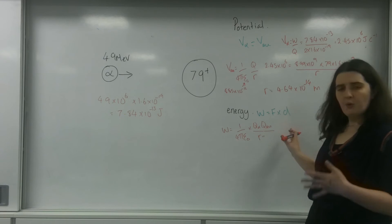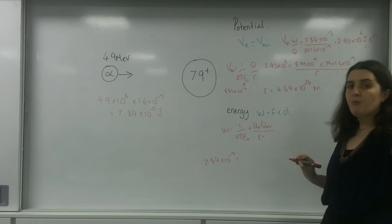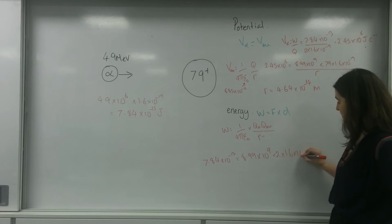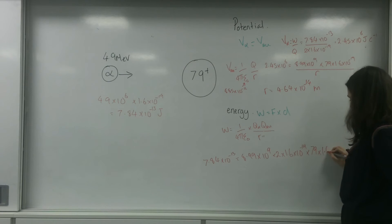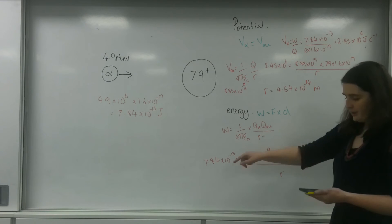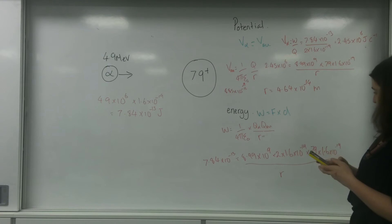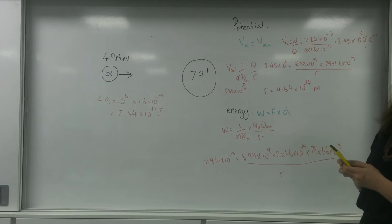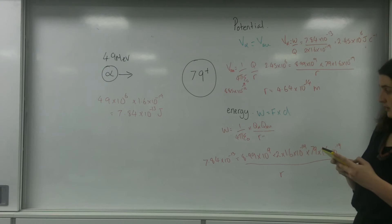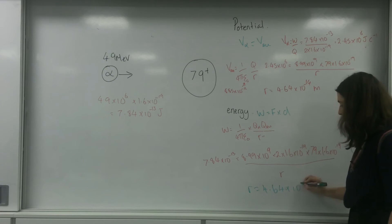Putting the data into this energy formula: 7.84 times 10 to the minus 13 equals 8.99 times 10 to the 9, times Q of the alpha (2 times 1.6 times 10 to the minus 19), times the charge of gold (79 times 1.6 times 10 to the minus 19), all over R. So R equals the numerator divided by 7.84 times 10 to the minus 13. Calculating: 8.99e9 times 2 times 1.6e-19 times 79 times 1.6e-19, divided by 7.84e-13, gives R equals 4.64 times 10 to the minus 14 metres.